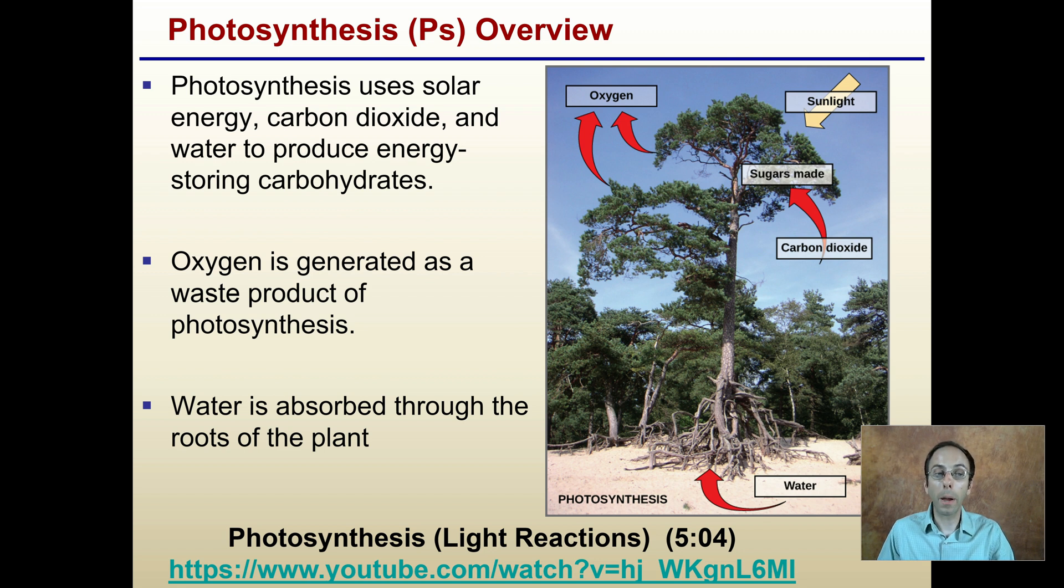Oxygen is generated as a byproduct and waste product for plants, which is good for us animals because we need that to breathe and go through our cellular respiration process. The water is absorbed through the roots of the plant and is transpired throughout to help move water, keep everything hydrated, maintain turgor pressure, and move nutrients.